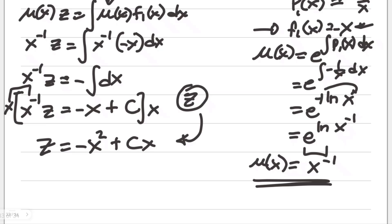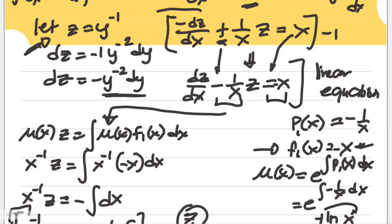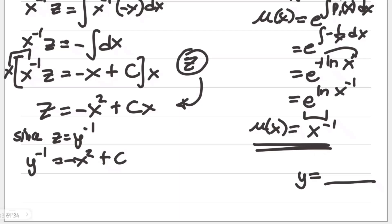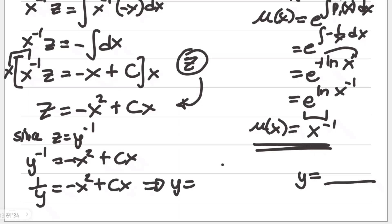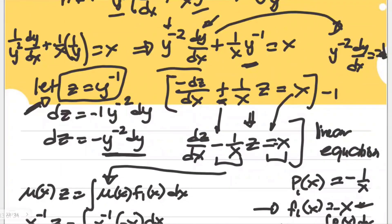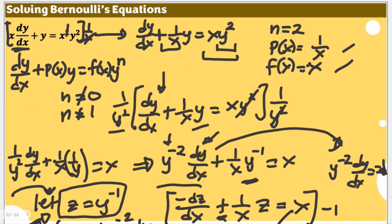Now we are done solving for z, but it's z we want expressed in terms of y. Since z equals y to the power of negative 1, substituting gives y to the power of negative 1 equals negative x squared plus Cx, which means 1/y equals negative x squared plus Cx. Therefore, y equals 1 over (negative x squared plus Cx). This is the solution of the original Bernoulli equation. We were able to use the concepts of linear equations once we introduced the substitution that brought it to a linear standard form. The solution is y equals 1 over (negative x squared plus Cx).